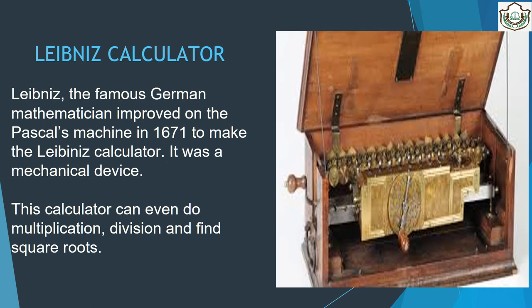Leibniz, the famous German mathematician, improved on Pascal's machine in 1671 to make the Leibniz calculator. It was a mechanical device. Apart from performing addition and subtraction, the Leibniz calculator could even do multiplication, division and find square roots.